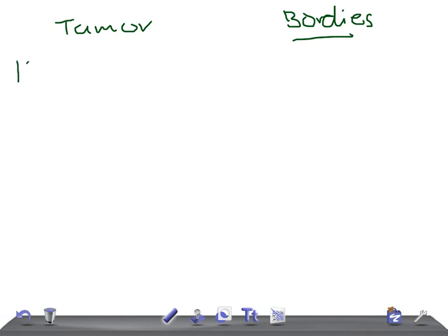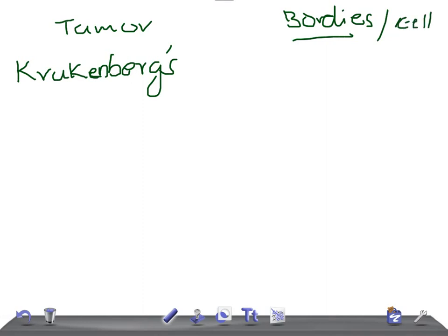Let's start with the most simple one: Krukenberg tumor. What type of bodies or cells do you see? These are really very important for USMLE, because if you see these types of histological findings, you can click the diagnosis correctly. The answer is signet ring cells.